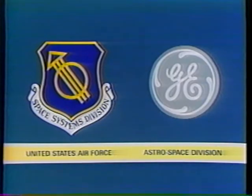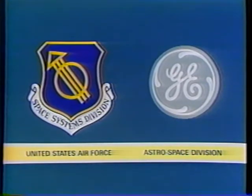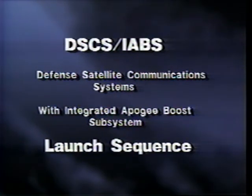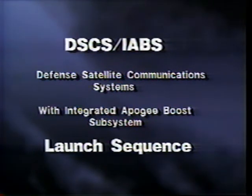The General Electric Company has contracted with the United States Air Force Space Systems Division to produce the Defense Satellite Communication System DSCS III. The following video animation uses computer models to show, in a highly abbreviated form, the orbital deployment sequence of the DSCS III satellite using the GE Integrated Apogee Boost Subsystem (IABS) on an Atlas II launch vehicle. All events are post liftoff.